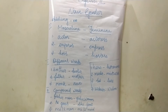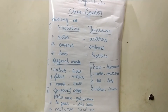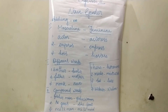Continuing with different words: fox–vixen, groom–bride, husband–wife, man–woman, nephew–niece, uncle–aunt.